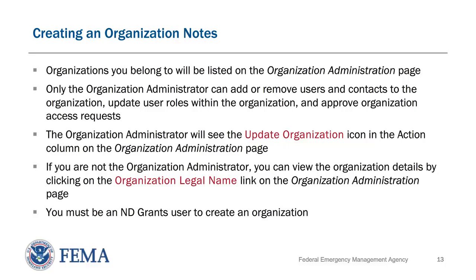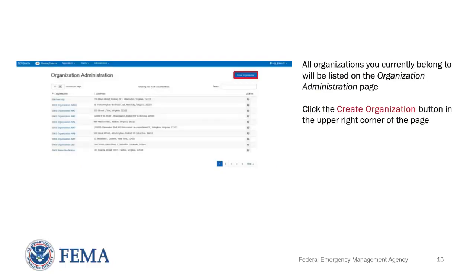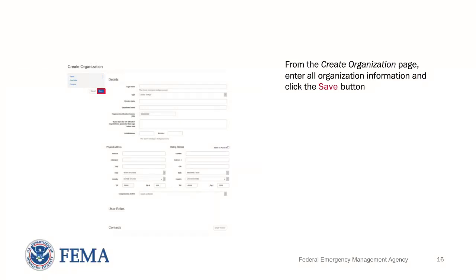Additionally, it is important to note that you must be an ND Grants user to create an organization. To begin, select the link under the Administration drop-down to view the Organization Administration page. All organizations you currently belong to will be listed on the Organization Administration list page. Click the Create Organization button in the upper right corner of the page. From the Create Organization page, enter all organization information and click the Save button. After creating the organization, you will automatically become the Organization Administrator.